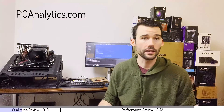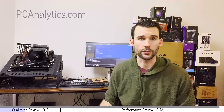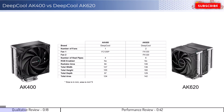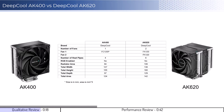With that in mind, let's start by looking at some qualitative metrics. Both coolers show the side of the cooler that would face the RAM. The AK400 will not have RAM clearance issues in most setups, while the AK620 will overhang the RAM slots. Additionally, the AK400 uses a single fan while the AK620 uses two fans, and it is possible to add an additional fan on both coolers.